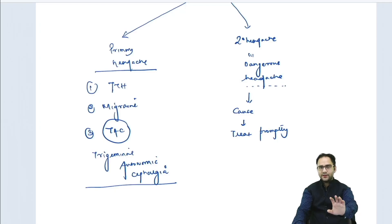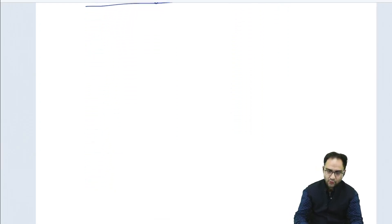The topic of discussion today is one of the preventive therapies of migraine, which are the newer drugs that have come in migraine—the CGRP antagonists. Before discussing CGRP antagonists, let's first know about the pathogenesis of migraine.